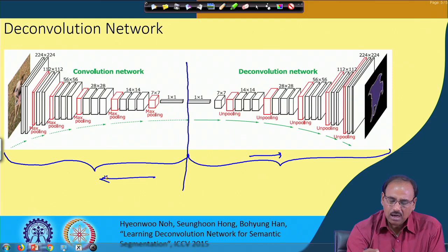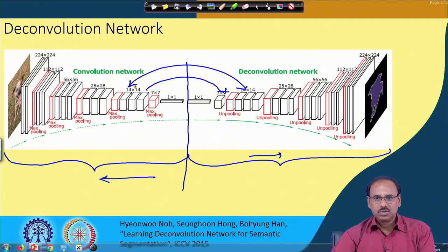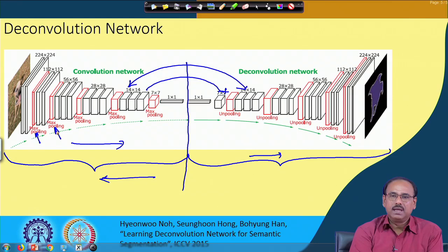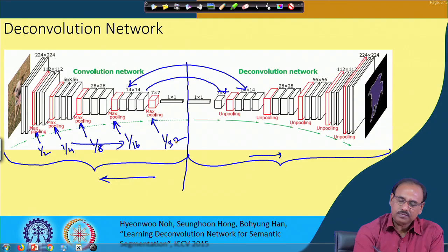Every max pooling layer has its corresponding unpooling layer, and every convolutional layer has its corresponding deconvolution layer. The advantage of this network is that as convolution gradually reduces the feature map size — first to 1/2 after the first max pooling, then 1/4, 1/8, 1/16, and 1/32 — the deconvolution side gradually increases it back through the same number of steps.